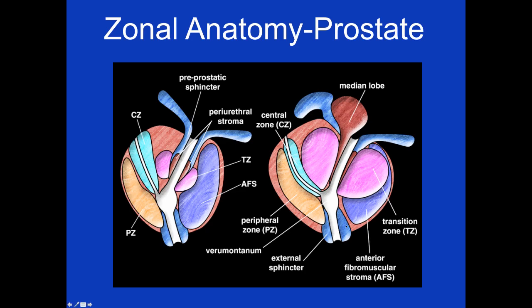As mentioned, the transition zone tends to hypertrophy with age. The image on the left is a cartoon of the prostate in a young male, showing the transition zone, central zone, and peripheral zone. On the right is a prostate from a man perhaps in his 70s, where the transition zone has enlarged dramatically, compressing both the central zone and the anterior fibromuscular stroma, and the peripheral zone as well. This is an example of transition zone hypertrophy. Additionally, you can see there is a median lobe in which the BPH extends into the bladder.